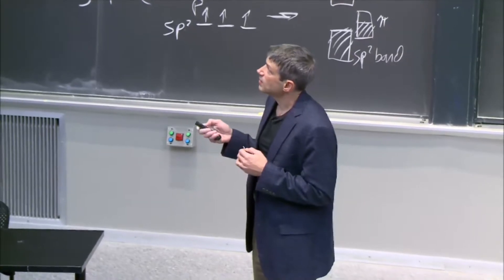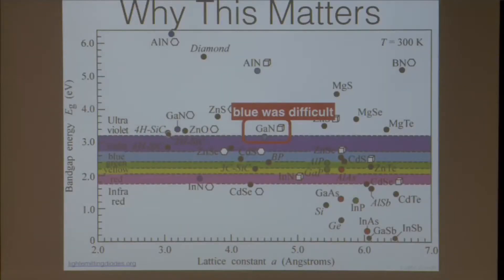And in fact, there was a lot of work around gallium nitride. Here's gallium nitride in one structure. Oh, notice this. There's gallium nitride. It's not on here. Darn it. Gallium nitride in other structures have different gaps. Oh, there it is. There's one.